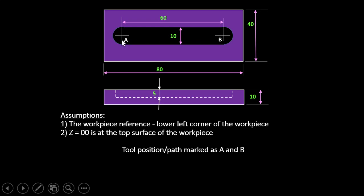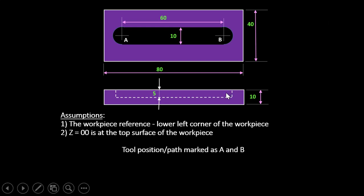We will mark the cutter path positions as A and B. The cutter enters the workpiece and travels from A to B taking a depth of cut of 2.5 mm. When it reaches B, it takes another 2.5 mm depth of cut for a total of 5 mm, then moves back to point A to complete the slot.